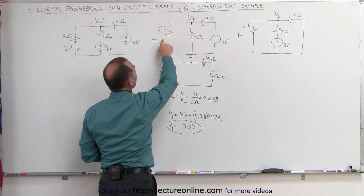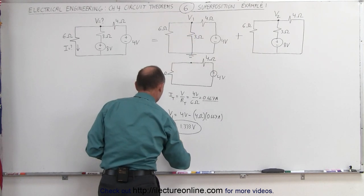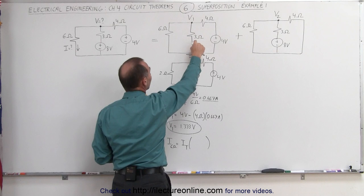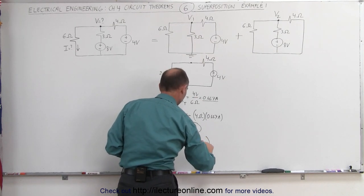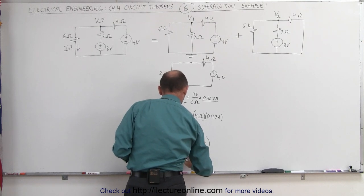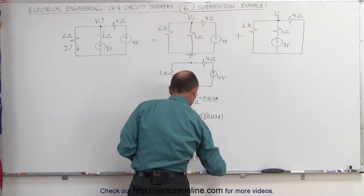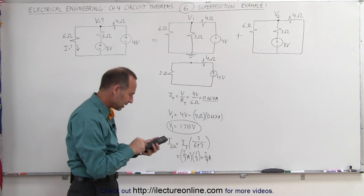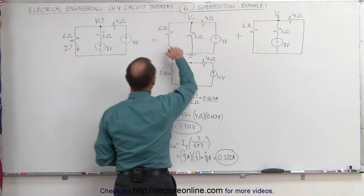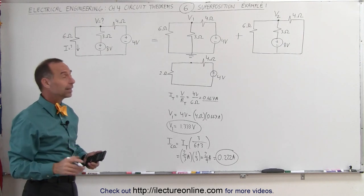What is the current through the 6 ohm branch? The total current is 0.667 amps — how does it split between the two branches? Using the current divider, the current through the 6 ohm resistor equals the total current times the ratio of the other branch resistance divided by the total: 3 divided by 9, which is one third. So two thirds of an amp times one third equals two ninths of an amp, or 0.222 amps. We now have the current through the 6 ohm resistor and the node voltage due to the 4 volt source.